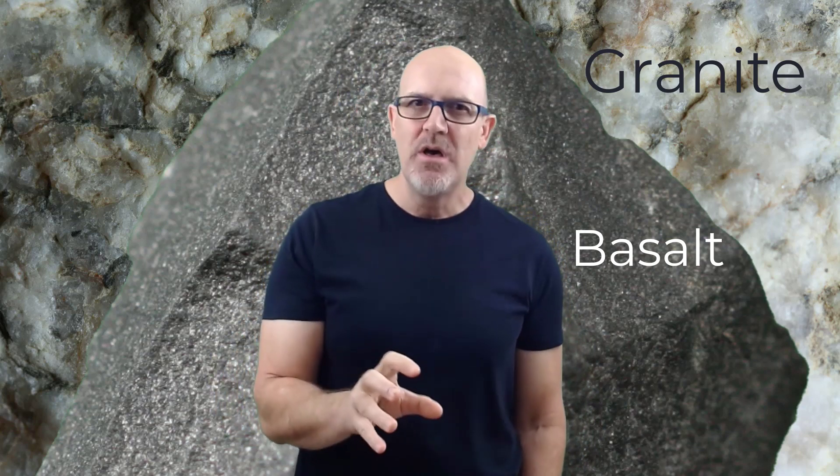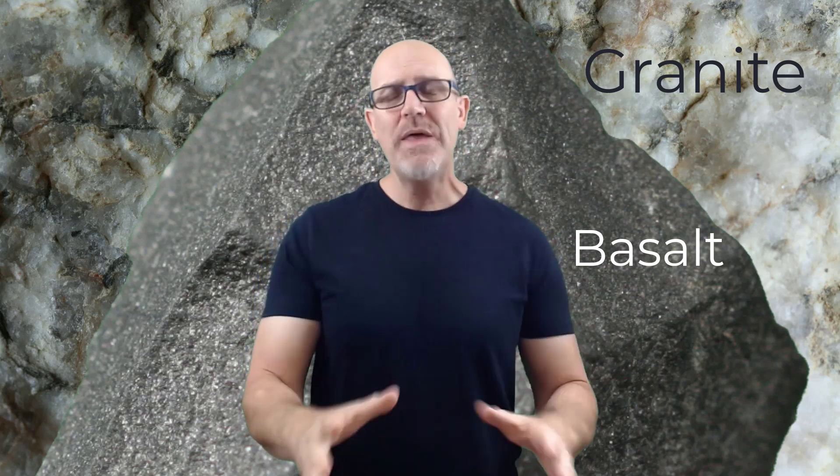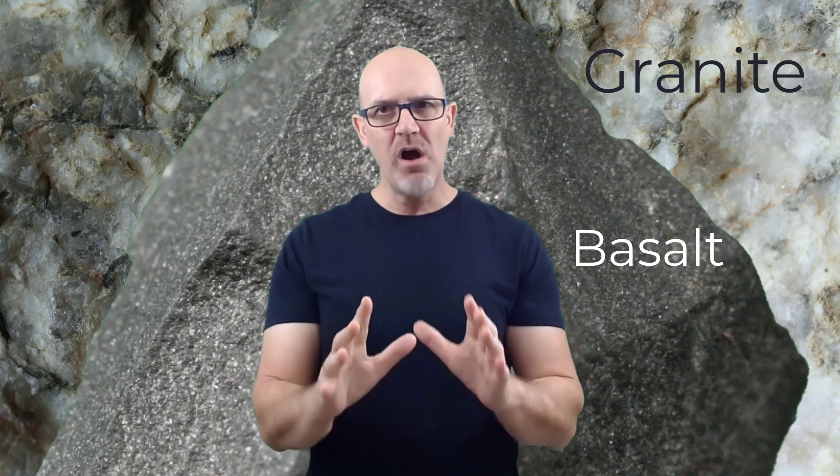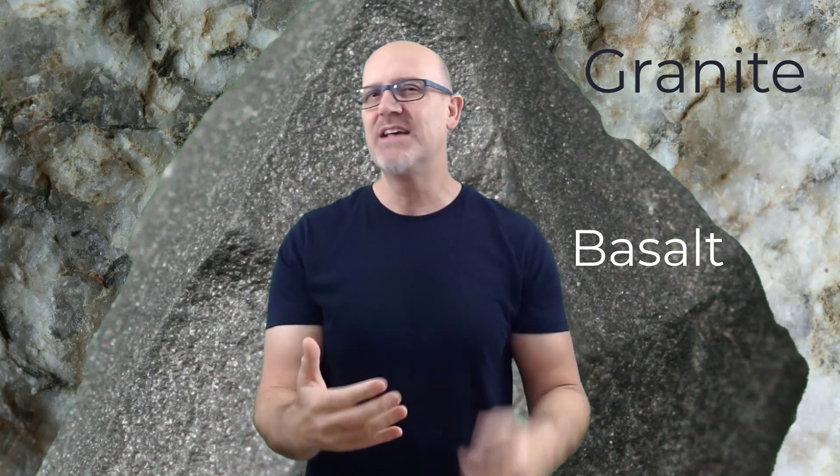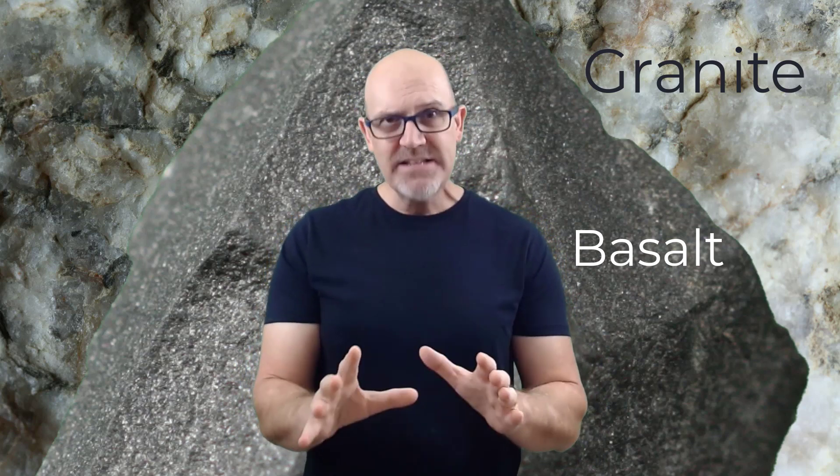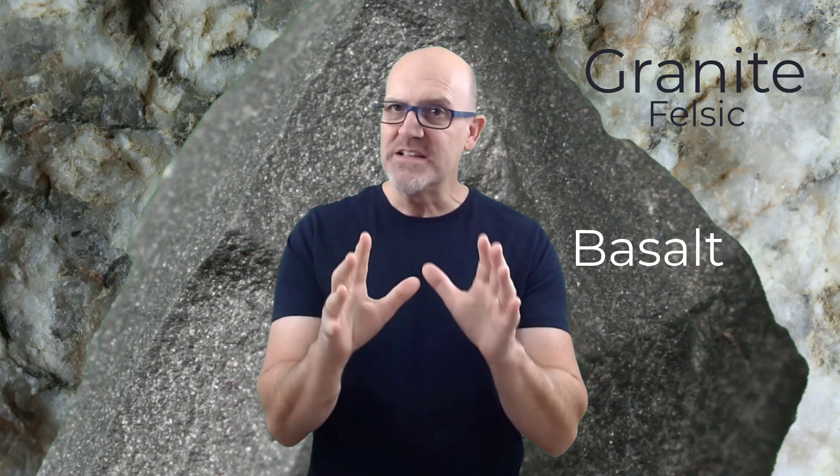The final thing we want to look at today is the colour of igneous rocks. Notice that granite is mostly a light, creamish colour, while basalt is a dark grey or black colour. And this is because granite has more silica in it than the basalt does. Now go back and watch the video on the crust and minerals for a recap on what silica is. So when the magma has a high silica content, the rocks that harden or crystallise from it will tend to be a lighter colour. Lighter, high silica rocks are called felsic, and darker, low silica rocks are called mafic.